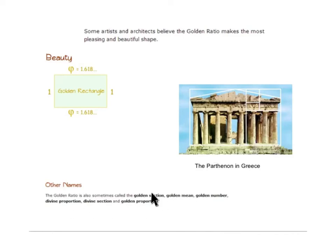There are some other names for this golden ratio. The golden section, the golden mean, the golden number, divine proportion, divine section, golden proportion.